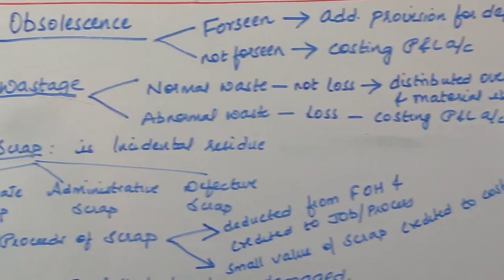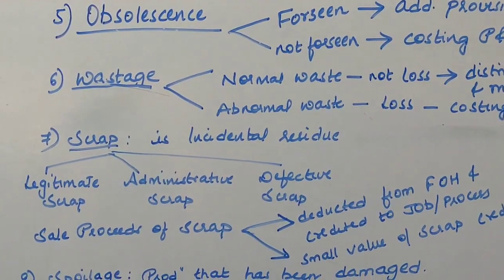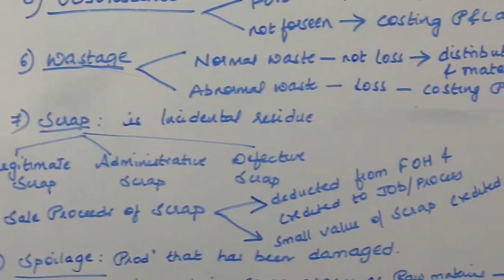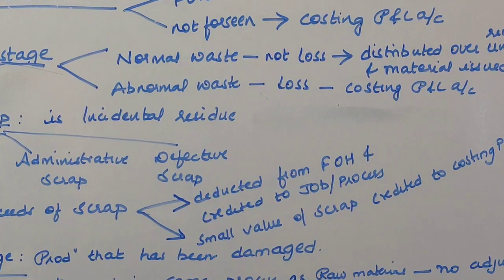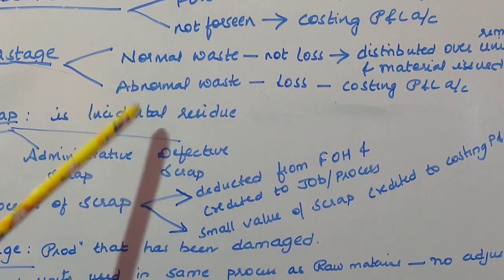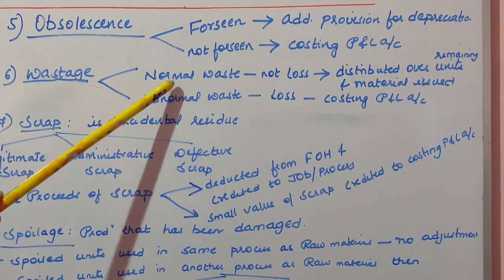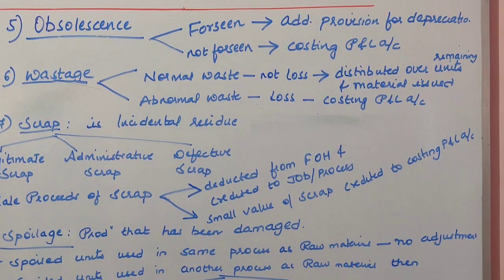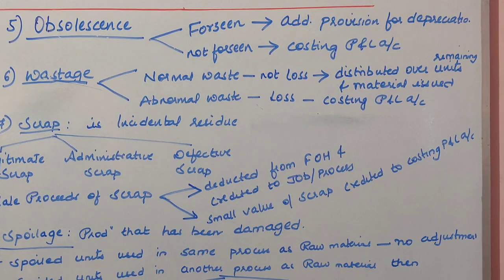Wastage is any loss in raw materials or loss in the value of raw materials. Waste is of two types: normal waste and abnormal waste. Normal waste is waste that arises naturally and is unavoidable — for example, loss due to evaporation, shrinkage, or changes in climate conditions.